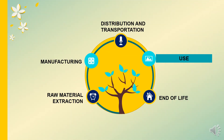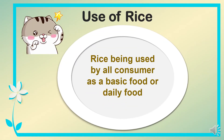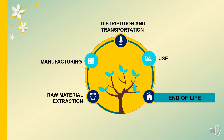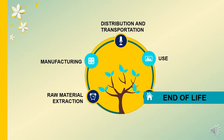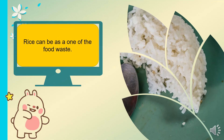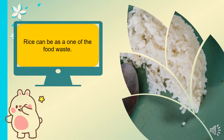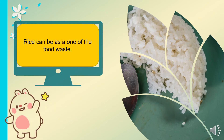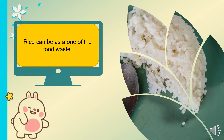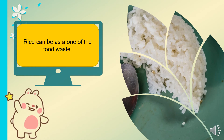The fourth stage in this life cycle is use. The rice is used by all consumers as a basic or daily food. The last stage of the life cycle is end of life. In the end of life, rice can become food waste, because of the behavior of humans who are greedy and take too much food at one time, causing food waste.